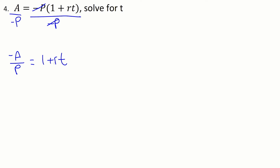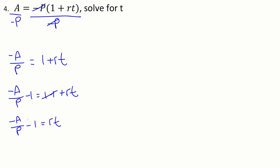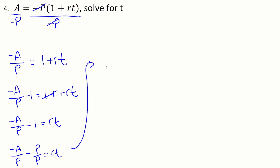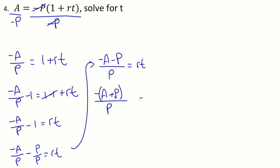Now we have a multiplication on t and we have a plus. So going in the opposite operation sense, we're going to get rid of the plus one first. So minus a over p, minus one on both sides — those would cancel out. So minus a over p minus one is equal to rt. On the left-hand side, I'm going to combine this into a single fraction. So we'll have minus a over p minus p over p as the equivalent fraction. So the fraction becomes minus a minus p over p is equal to rt.